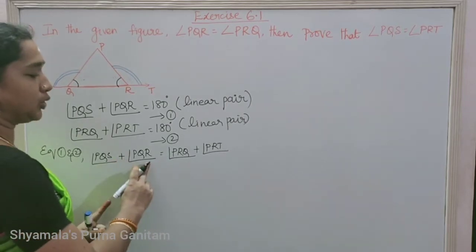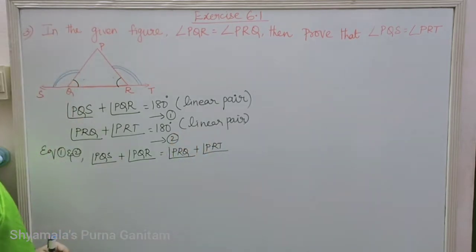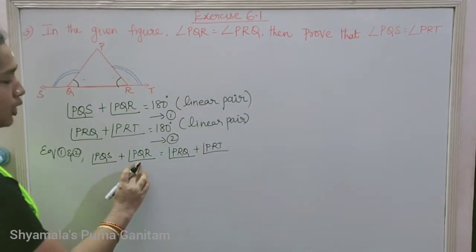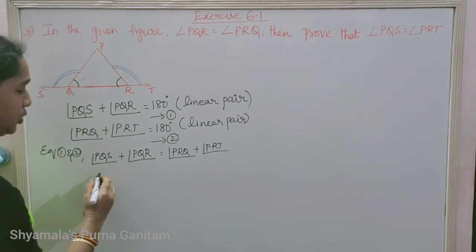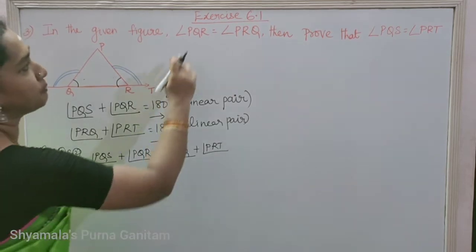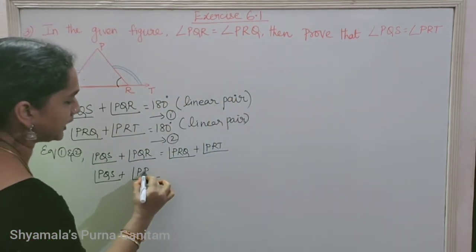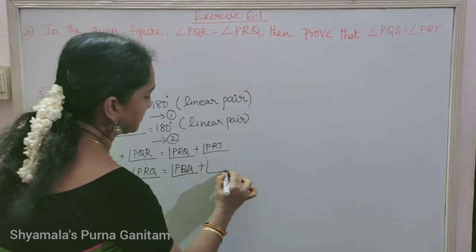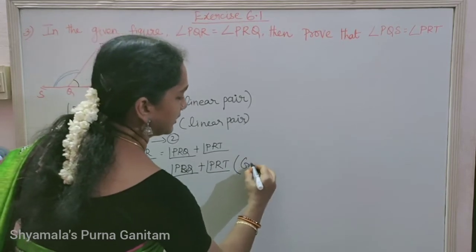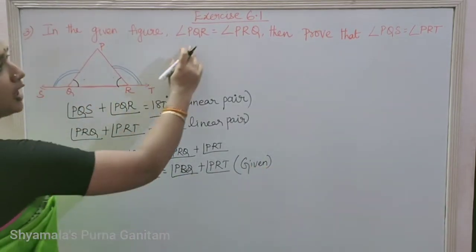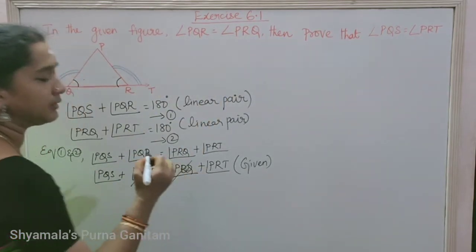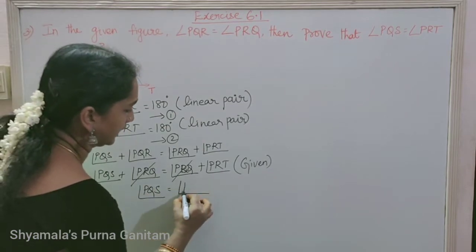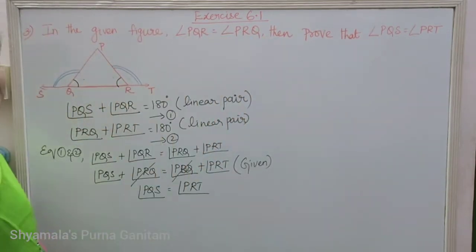In the question it is given that PQR equals PRQ, so instead of PQR I am substituting PRQ. So on both sides we have PRQ, and they cancel. Whatever remains gives us angle PQS equals angle PRT — which is exactly what we were asked to prove.